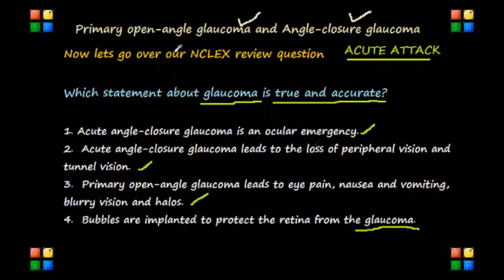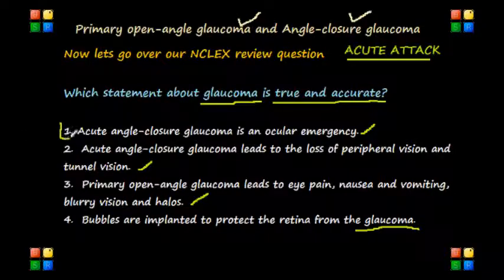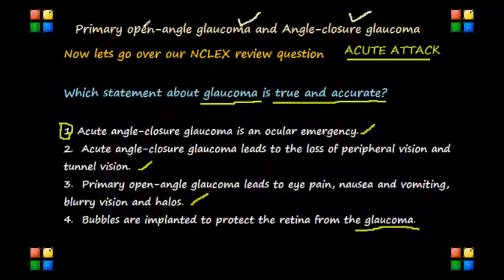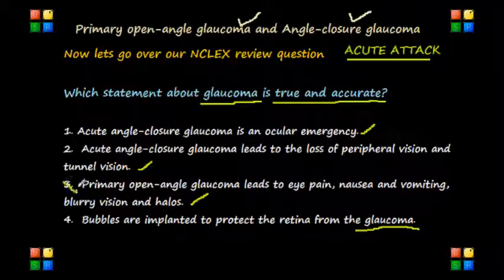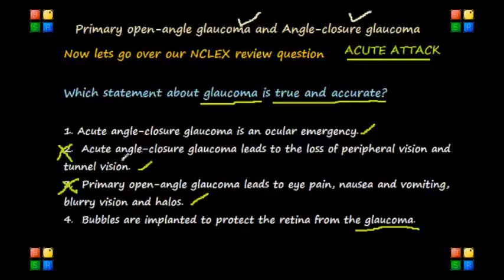If you were listening carefully to my previous lecture about glaucoma, you will realize that the correct statement is number one — acute angle closure glaucoma is an ocular emergency, and it is usually characterized with eye pain, nausea and vomiting, and blurred vision and halos — which makes number three a false statement. Number two is also false, since the loss of peripheral vision and tunnel vision are signs and symptoms of primary open angle glaucoma, not acute angle closure glaucoma. And number four is false because bubbles are placed to treat retinal detachments, not glaucoma.